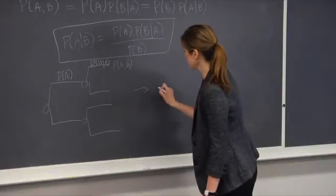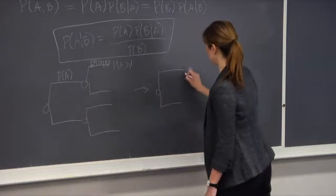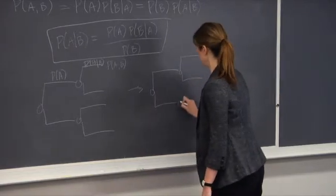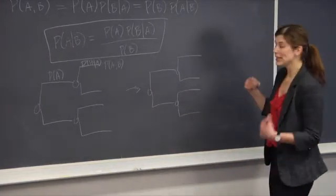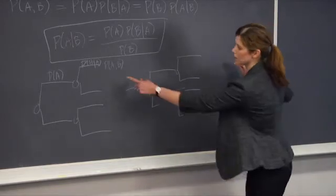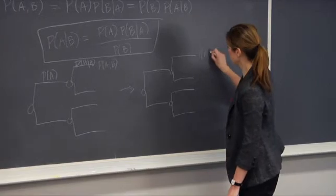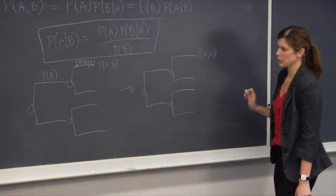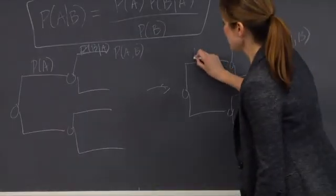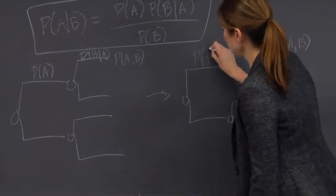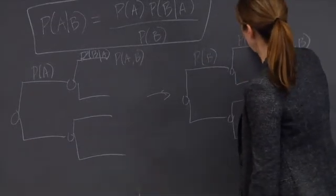When I flip the tree, we again go through the same steps. So the probability at the end of the tree is the same, the probability of A and B. And now this becomes the probability of B and the probability of A given B.